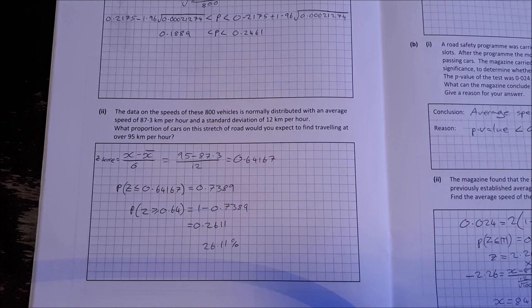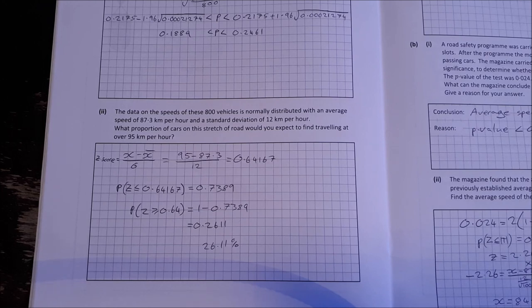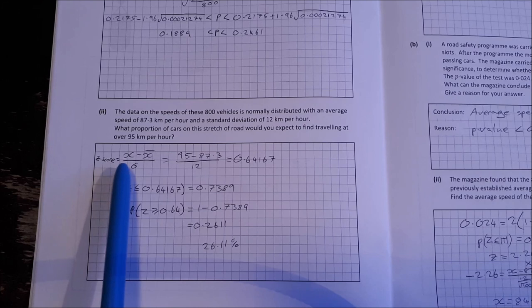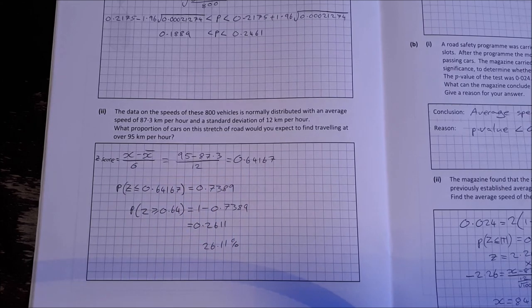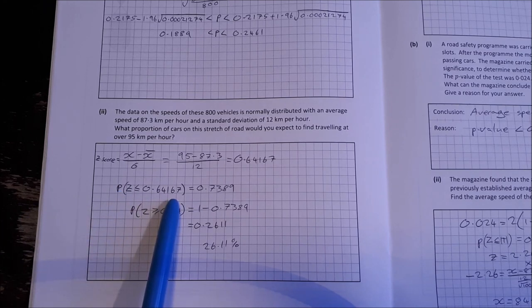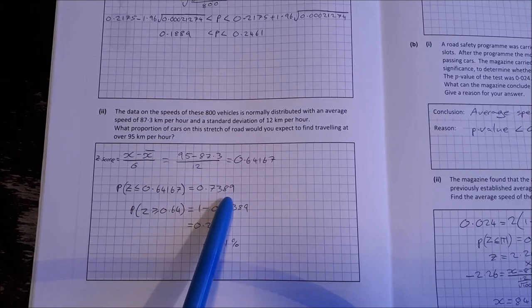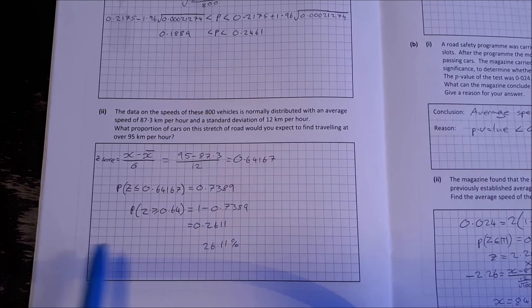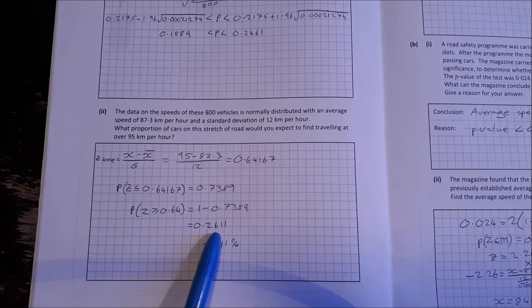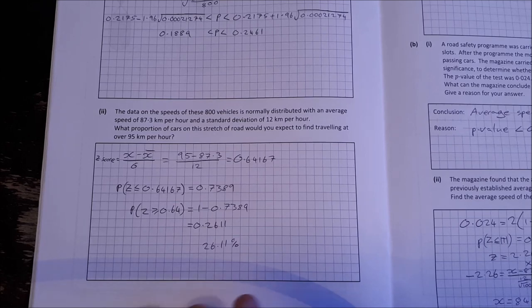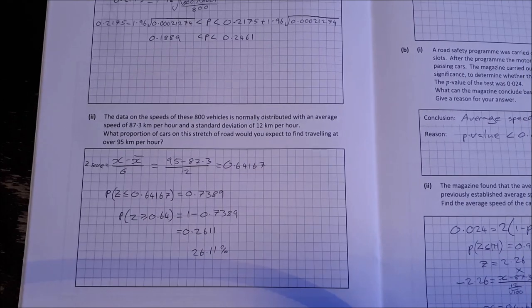Part 2. The data on the speeds is normally distributed with an average speed of 87.3 kilometers per hour and a standard deviation of 12 kilometers per hour. What's the proportion of cars on this stretch of road that you would expect to find traveling at over 95 kilometers per hour? So we do the z-score for this. x minus x bar over sigma. 95 minus 87.3 over 12 to get 0.64167. So the probability that z is less than this number is 0.7389. The probability that z is greater than 0.64167 is 1 minus this to get 0.2611 or 26.11%. Any questions again, especially with this one, question 8, just ask in the comments below.